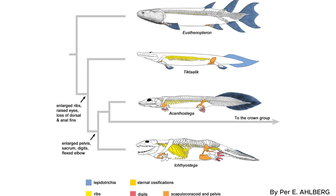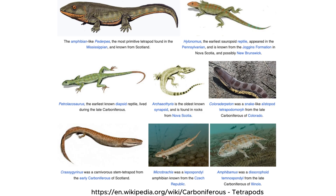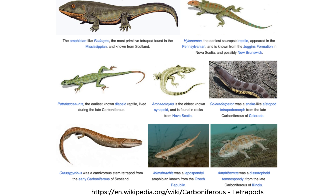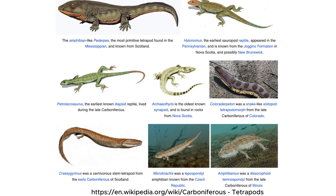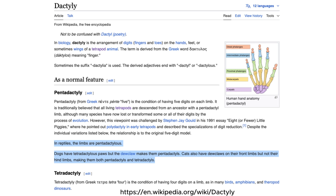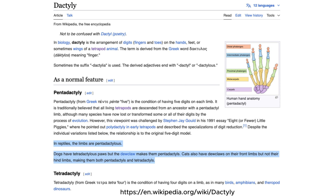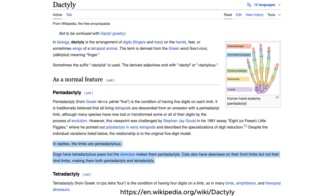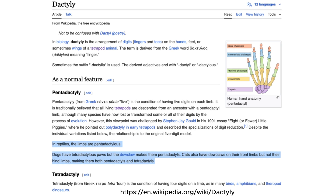The five-finger structure we see today was not immediately set in stone. Around 340 million years ago, during the Carboniferous period, the five-digit structure became more common and eventually became the standard for tetrapods. Evolutionary pressure during this time favored limbs with five fingers because they struck a good balance between complexity and function — too many digits would have made limbs bulky and less efficient.